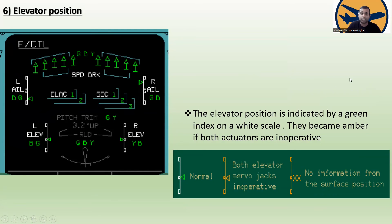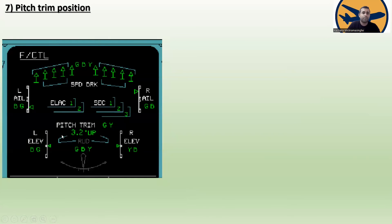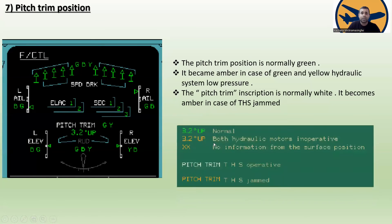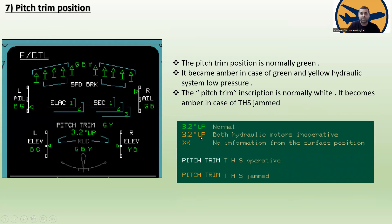Topic seven is pitch trim position. The pitch trim position is normally green and becomes amber when both green and yellow hydraulic systems have low pressure. The pitch trim inscription is normally white and becomes amber in case of a THS jam. The THS has two hydraulic motors — green and yellow. If both motors are inoperative or there is no surface position information, corresponding symbols appear.